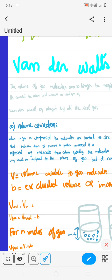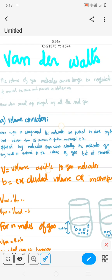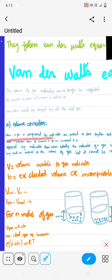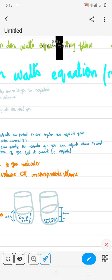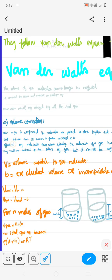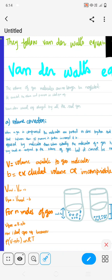First case, we're going to see volume correction. What did he correct in the volume? When a gas is compressed, the molecules are pushed so close together that repulsive force starts between them. If the pressure is further increased, if we press the balloon more and more, it is opposed by molecules themselves.